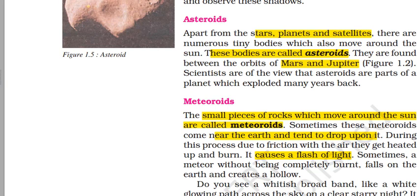We have talked about stars, planets, and satellites. Apart from these, there are many other small bodies that move around the sun. One of them is asteroids. Asteroids revolve around the sun in a fixed orbit and are generally found between the orbits of Mars and Jupiter.